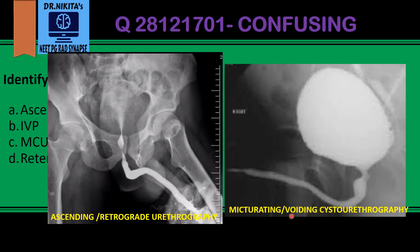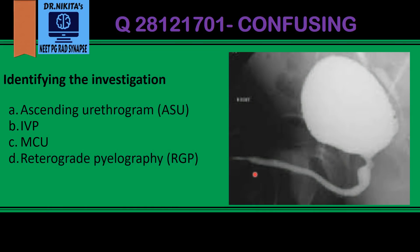While in micturating cystourethrography, as the term says, we are seeing the bladder as well as the urethra. The bladder will be filled with contrast and the urethra will also be opacified, unlike ascending urethrography where the bladder is empty. In MCU, the bladder will also be full and the urethra will also be opacified. Looking at the image in the question, we have the bladder filled with contrast and the urethra — so this is micturating cystourethrography (MCU).